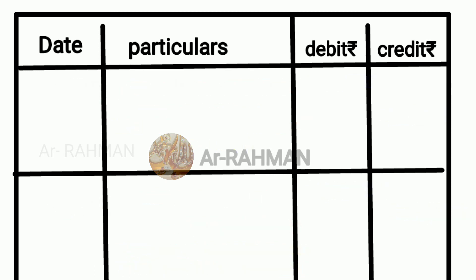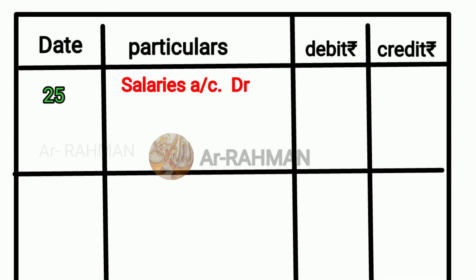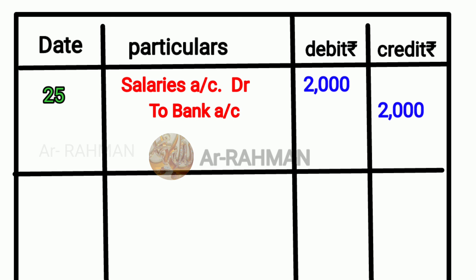Next question: paid salaries through ECS. Salaries paid through ECS — bank. Salary account Dr, to bank account. The value is Rs.2,000 and here also Rs.2,000. Narration: being paid salaries through ECS.